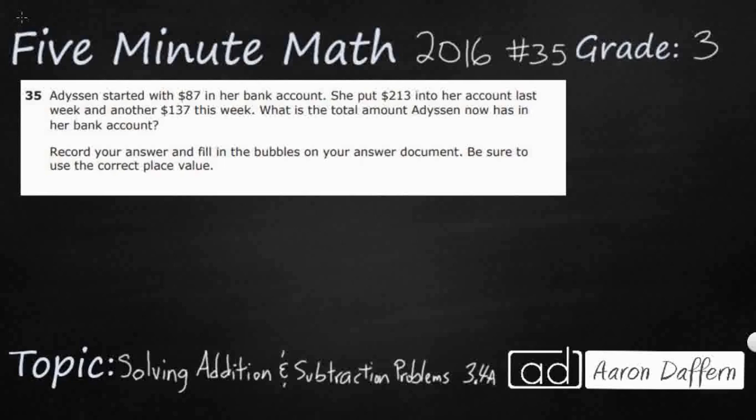So the problem is this first part right up here, but then underneath it says record your answer and fill in the bubbles on your answer document. Be sure to use the correct place value. So we have to do two things here. First, we have to get the correct answer. Second, we have to bubble it in correctly because if we get the correct answer in our notes, but then we bubble it in incorrectly, we can still get the problem wrong. So let's worry about getting it correct first.